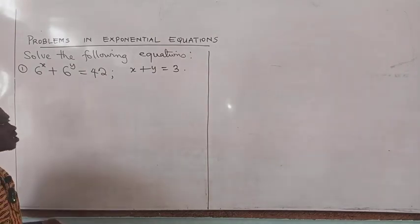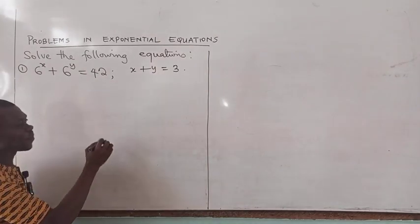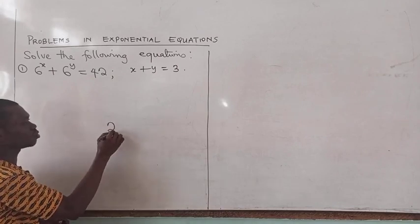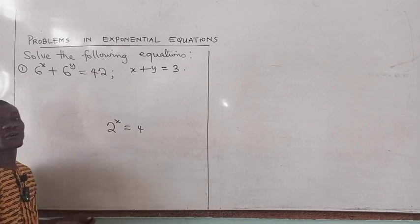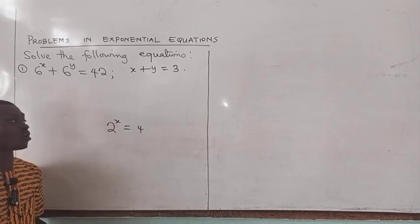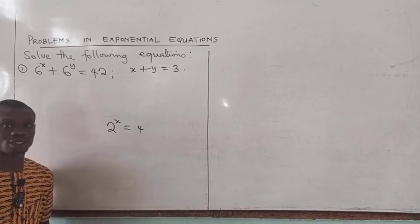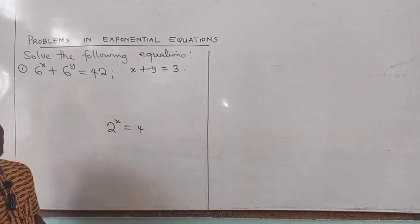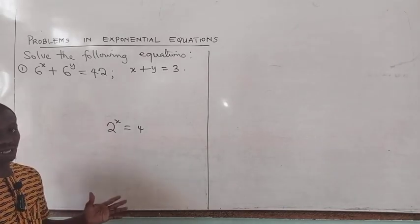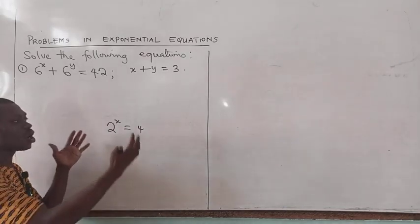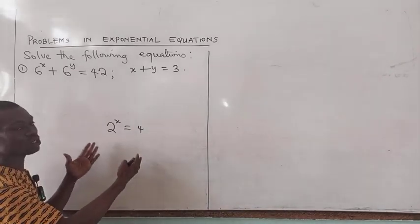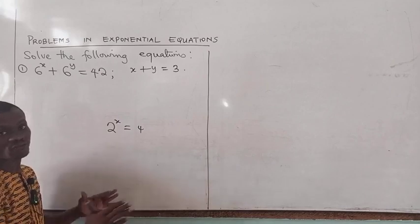Remember that an exponential equation is an equation where the exponents are variables. For example, 2 raised to the power x equal to 4 is an exponential equation because there is the presence of an exponent which is a variable. Now remember also that one of the things that allow us to solve exponential equations easily is the fact that on both sides of the equation, we can actually write them in exponent form such that they will have the same base.